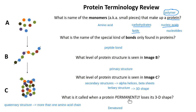Each of those types of gated channels undergoes a non-permanent change. Things do change their shape in the body sometimes. But if it's a permanent change in shape, that's denaturation — and that's not good. Why is a denatured protein bad?